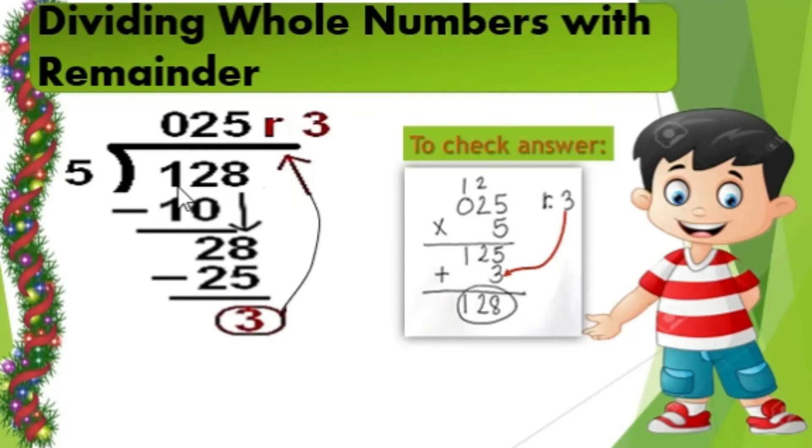Since 1 cannot be divided by 5, we have to include 2 to make it 12. How many 5s inside 12? There are 2. 2 times 5 equals 10. 12 minus 10 equals 2. Since 2 cannot be divided by 5, we have to bring down 8. How many 5s inside 28? There are 5.